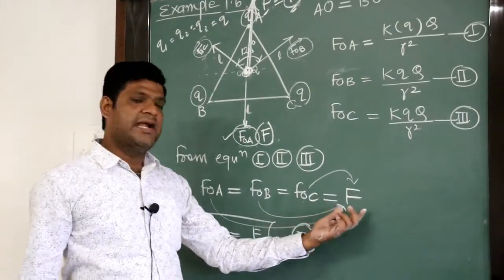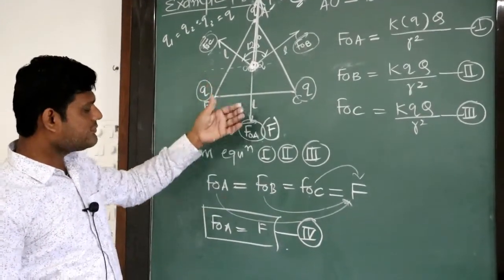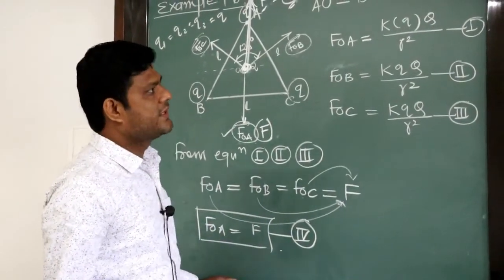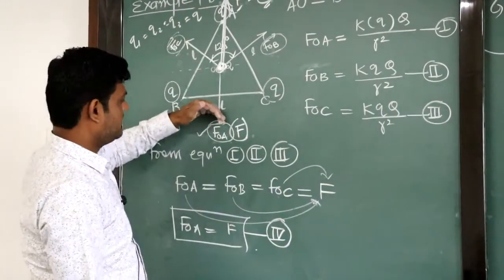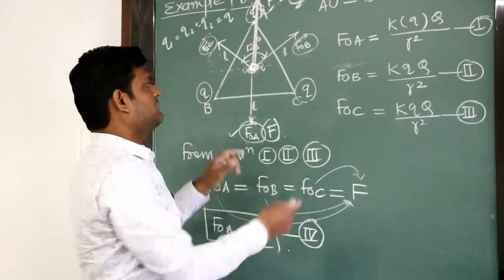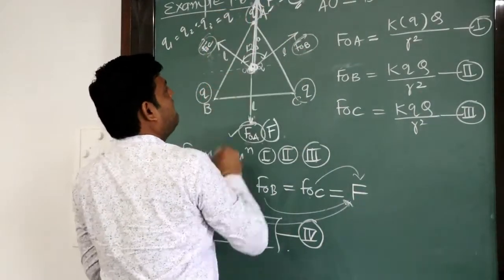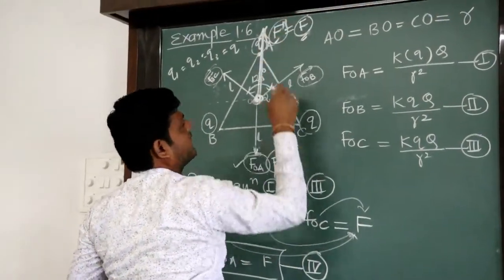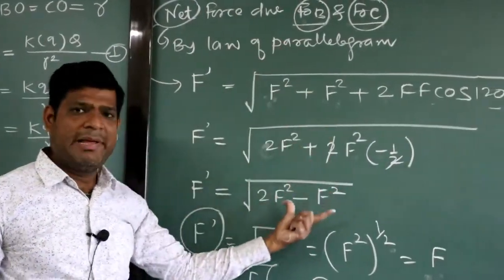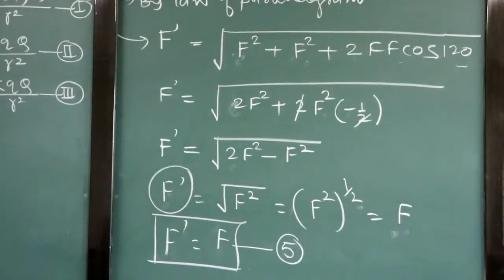For simplification we denote each force as capital F. FOA is along the line, so it remains F. FOB and FOC are not along the axis, so we find their net using the parallelogram law, giving F' = F.